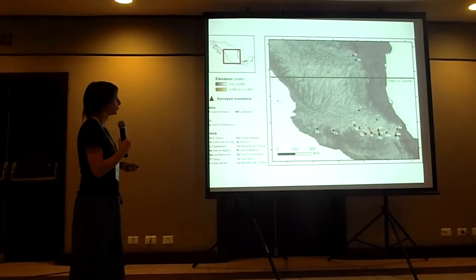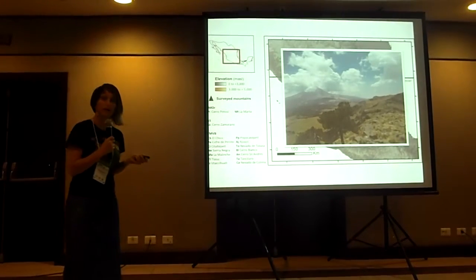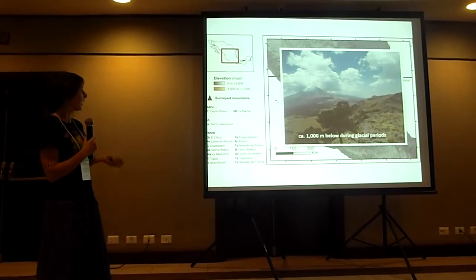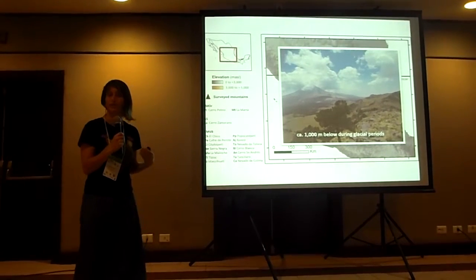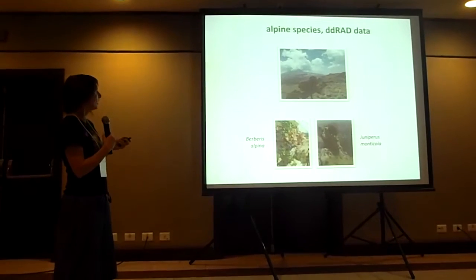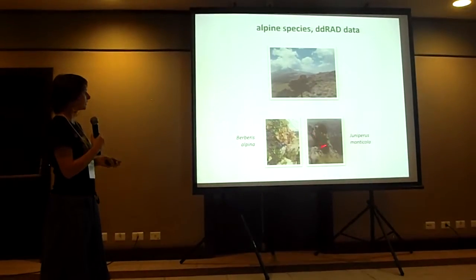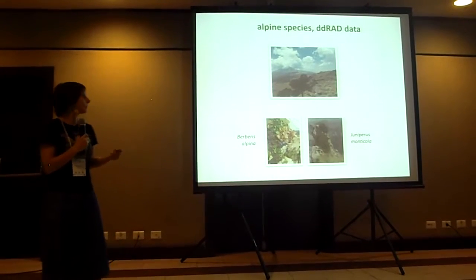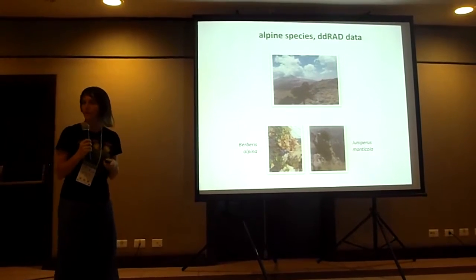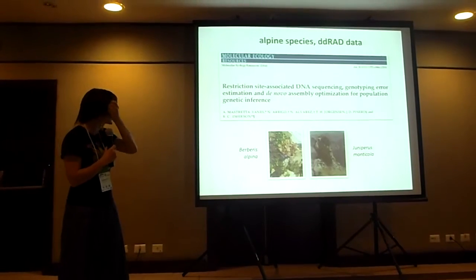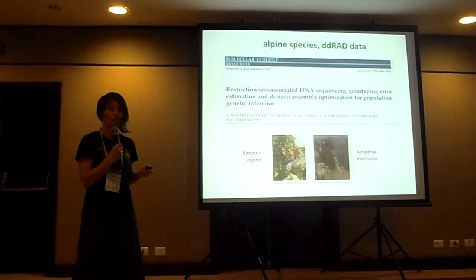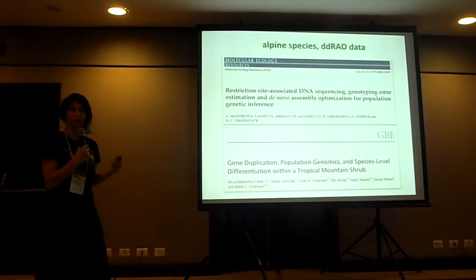More specifically, these are the mountains I surveyed for alpine grassland vegetation, which today grows above 3,500 meters above sea level as a minimum. From the fossil record, we know it used to grow 1,000 meters below where it is now during the glacial periods. We collected two species from this environment: Berberis alpina and Juniperus monticula. We generated double-digested RADseq data assembled de novo, including DNA replicates to estimate genotyping error, and we also filtered out paralogs to control for duplication.